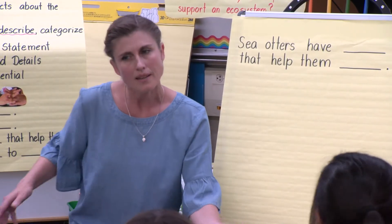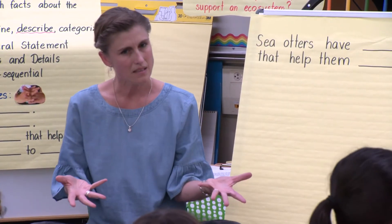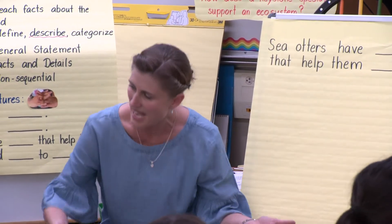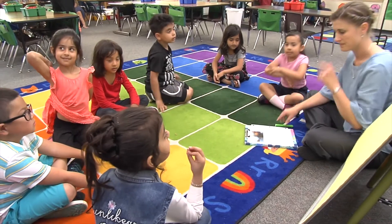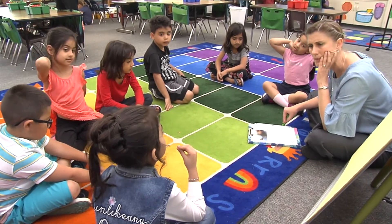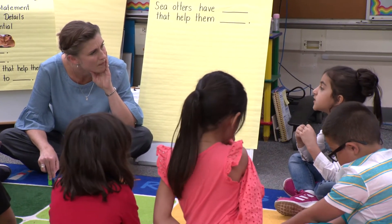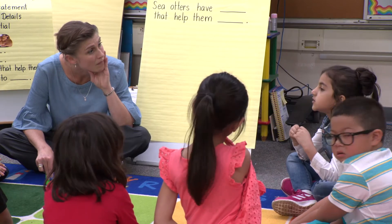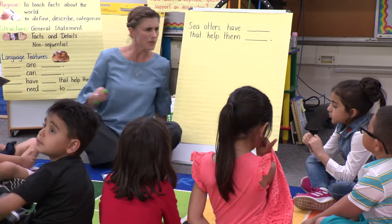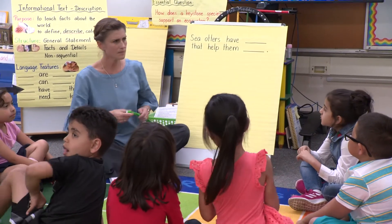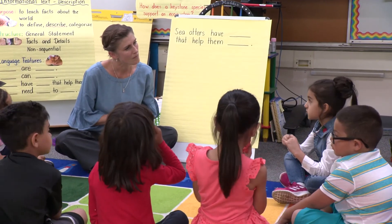And if sea urchins are their favorite food, they need to have something on their anatomy so that they can eat that. So what do sea otters have that help them eat sea urchins? A student responds: sharp teeth. The teacher asks: Marhaba, you think they have sharp teeth? The student explains: when somebody has sharp teeth, they could eat it. The teacher prompts: how do we write that? Student: sea otters have sharp teeth that help them eat the sea urchins.